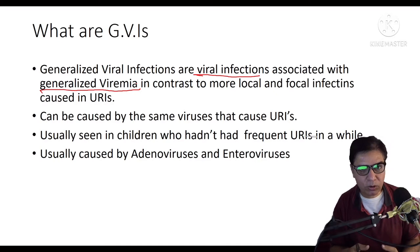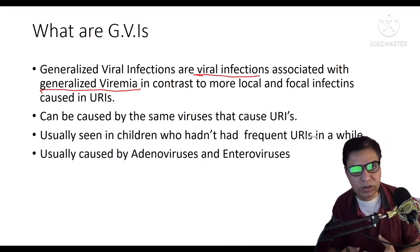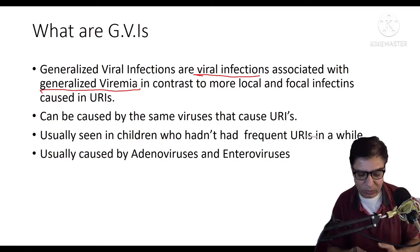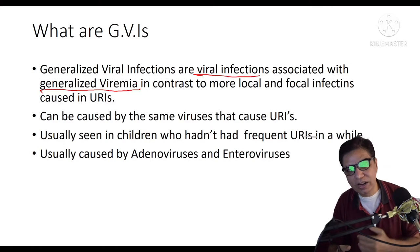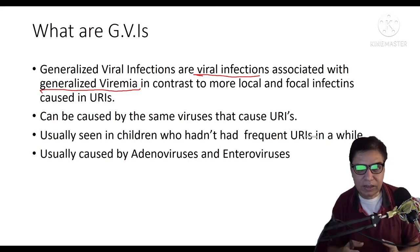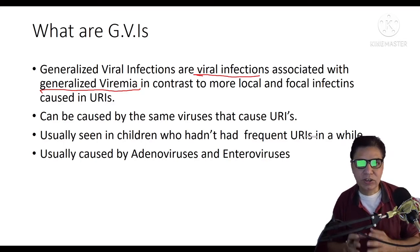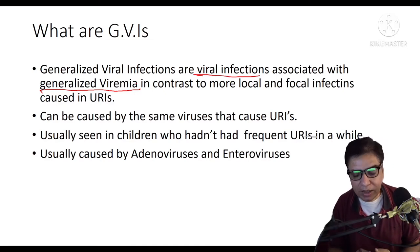In upper respiratory tract infections you get more focal symptomatology — a runny nose, a cough, a stuffed feeling in the throat or nose. While in generalized viral infections, the viruses are multiplying in your blood. They use focal sites to enter the body but thrive and multiply in the patient's blood — that's why we call it generalized, because it's everywhere, in almost every corner of the patient's body.